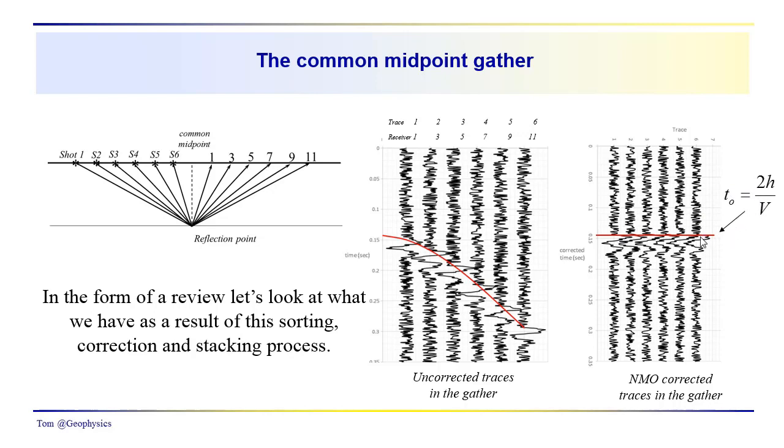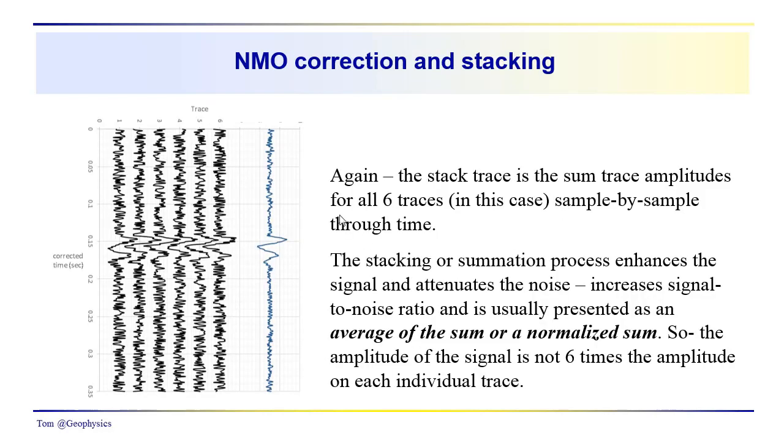And in this process of NMO correction, we've basically corrected the arrival times so that they're all effectively straight up and coming in at a straight up and down time, this 2H over V. So that's telling you something about the geometry we're going to get in the stack trace.